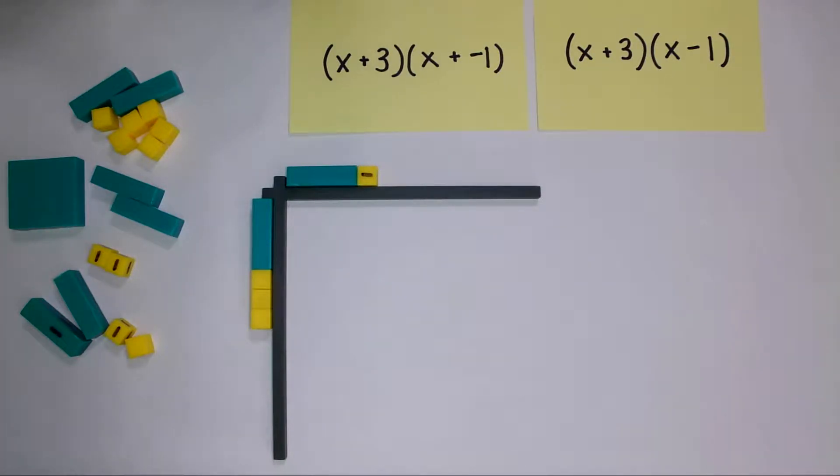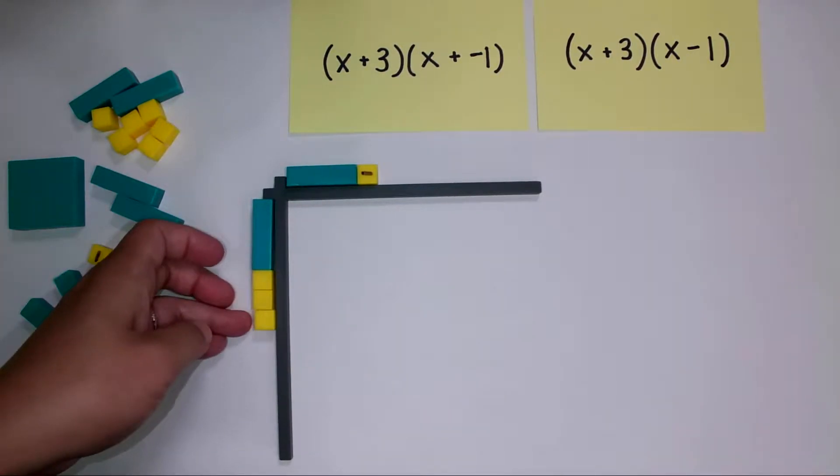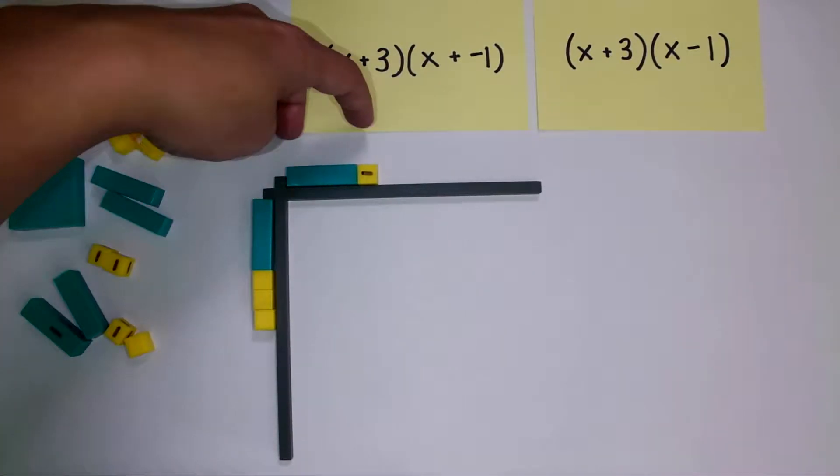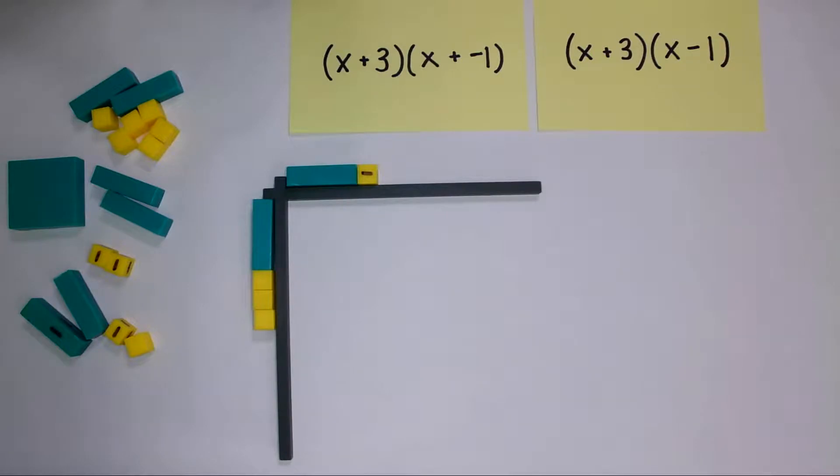You'll notice in our problem here in our corner piece we have our two terms. We have x plus 3 and we have x minus 1. You'll notice there's a negative sign on that integer constant. So now we're going to carry out the same procedure that we've been using to multiply these manipulatives.